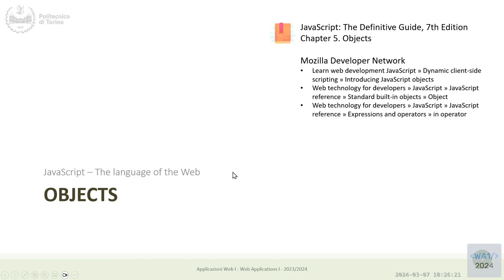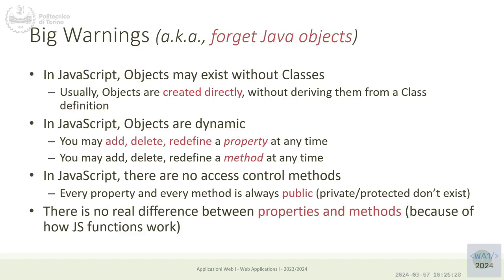Let's talk about objects. JavaScript is an object-oriented programming language. The first thing you have to know about JavaScript objects is: forget everything you know about Java objects — they work in a completely different way. One could say that Java is a class-oriented programming language while JavaScript is truly an object-oriented programming language.